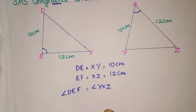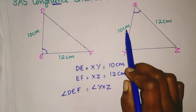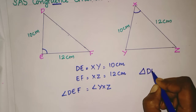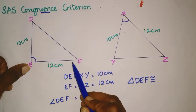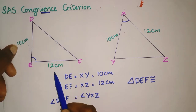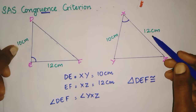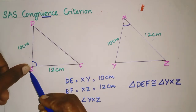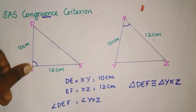Then we can say these two triangles are congruent. Two sides and the included angle here, again two sides and the included angle. Triangle DEF is congruent to triangle YXZ. We first took 10 centimetres then 12 centimetres, so in the other figure also we take 10 centimetres then 12 centimetres. So we write triangle DEF congruent to triangle YXZ, matching the included angles.